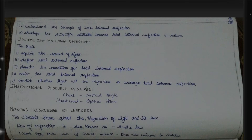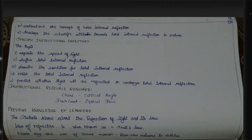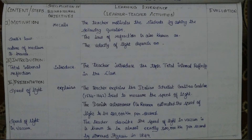You can also use a working model, flowchart, etc. Previous knowledge of the learners: the students know about the refraction of light and its laws studied in 7th standard. The law of reflection is also known — Snell's law. Uses of convex mirror — rear view mirror in vehicles.